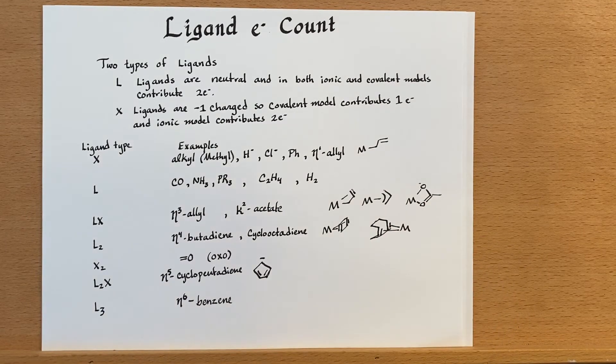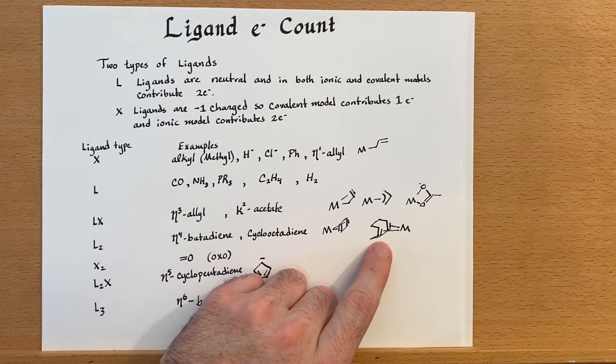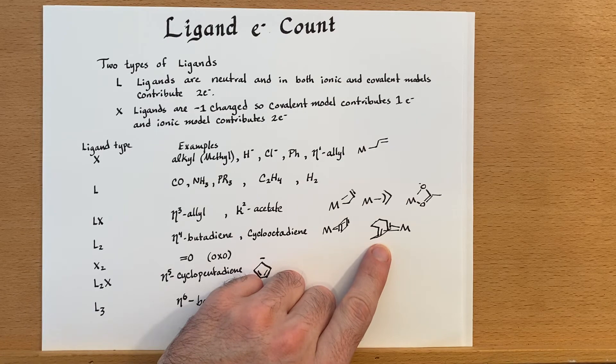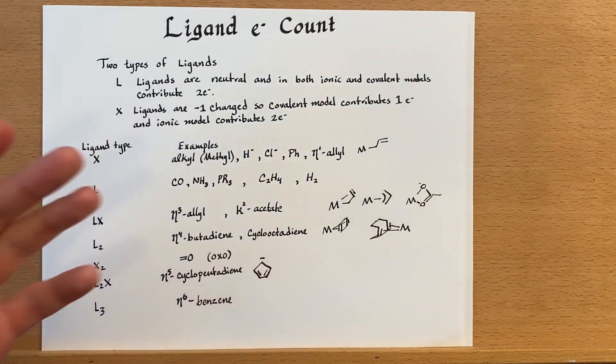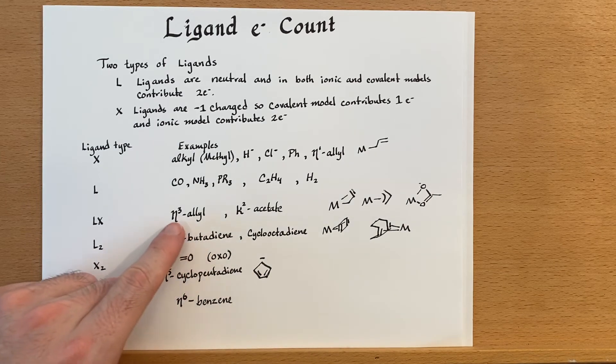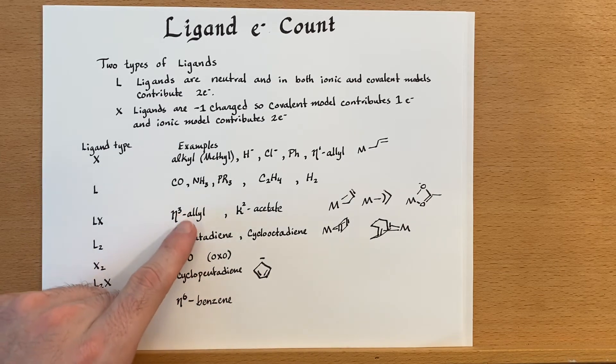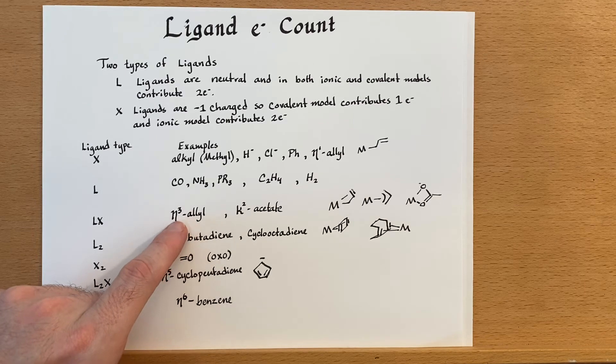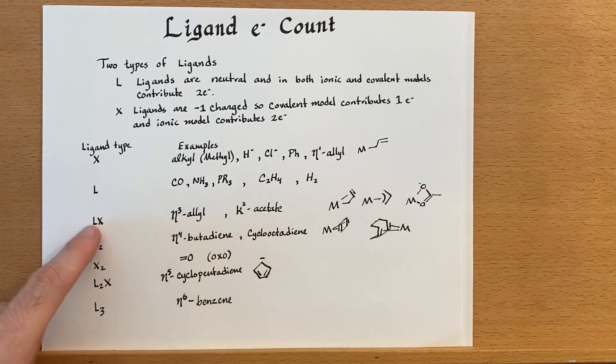Side note, cyclooctadiene sometimes gets used in preparing catalysts for organometallic complexes, because this particular ligand is easy to displace with others. But that doesn't really matter for electron counting. In this case, I should really go back up to here and talk about these LX ligands.